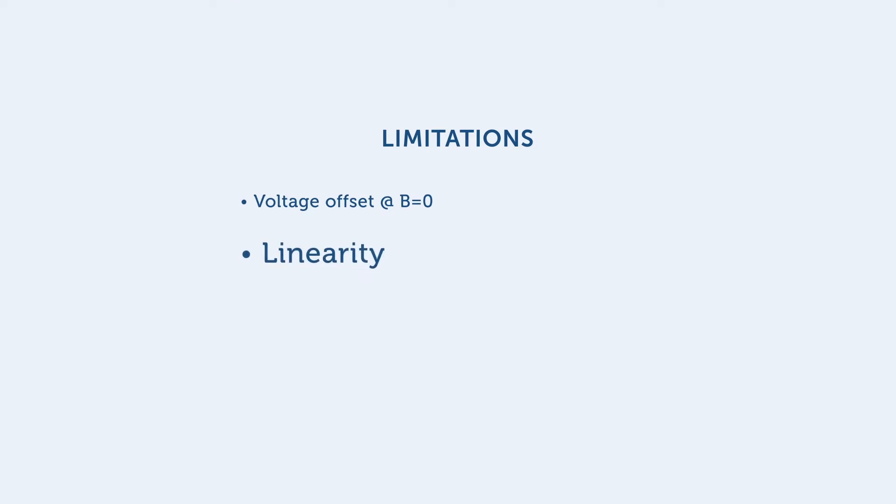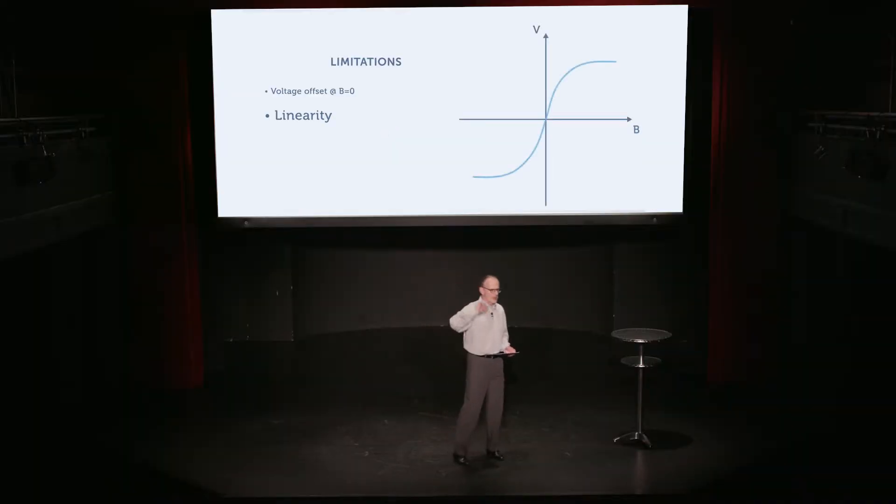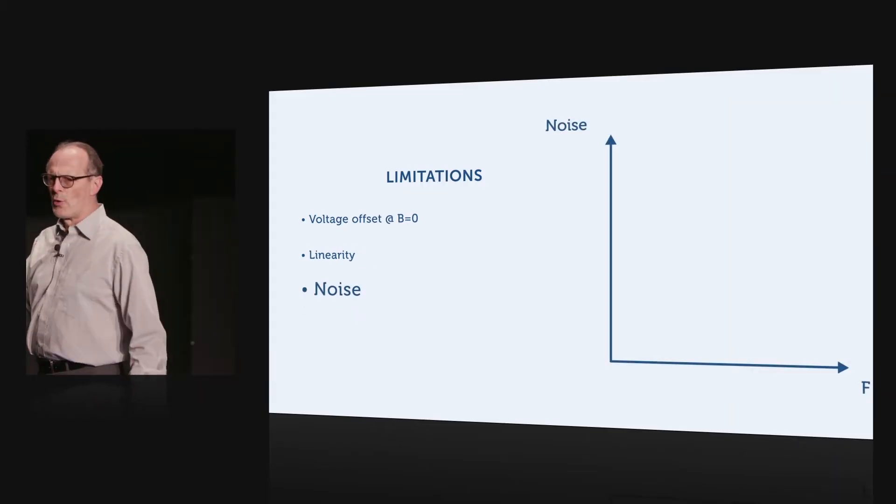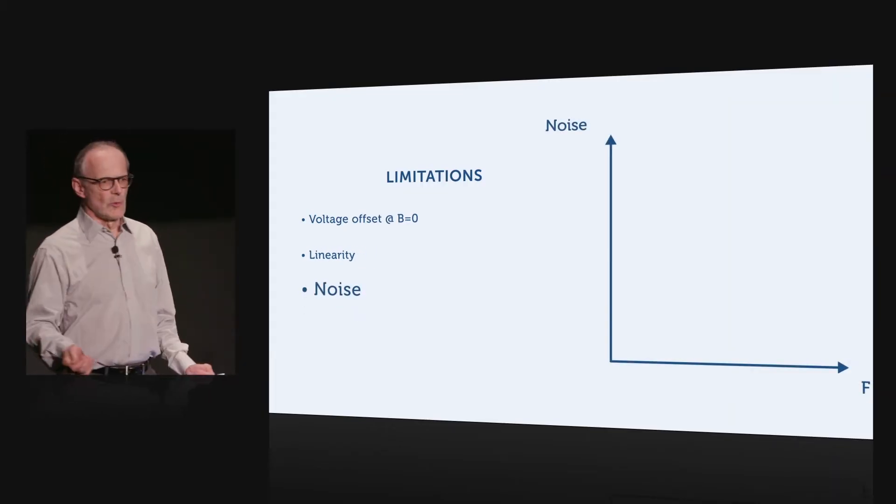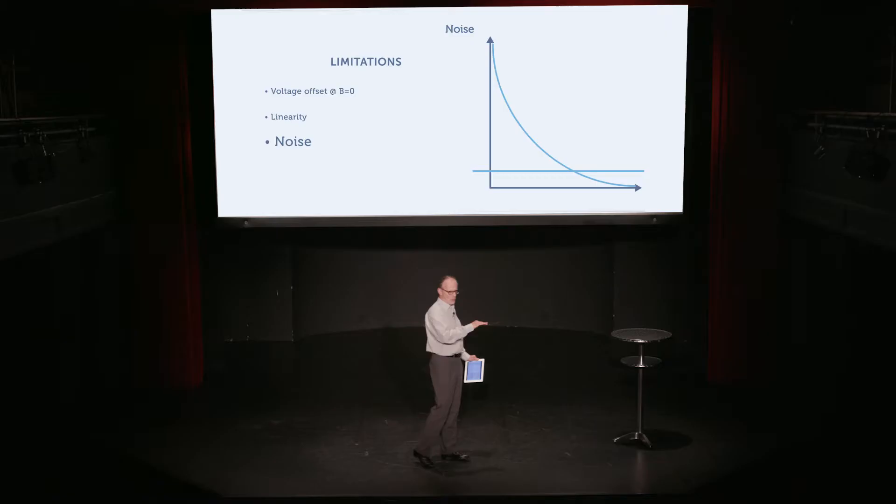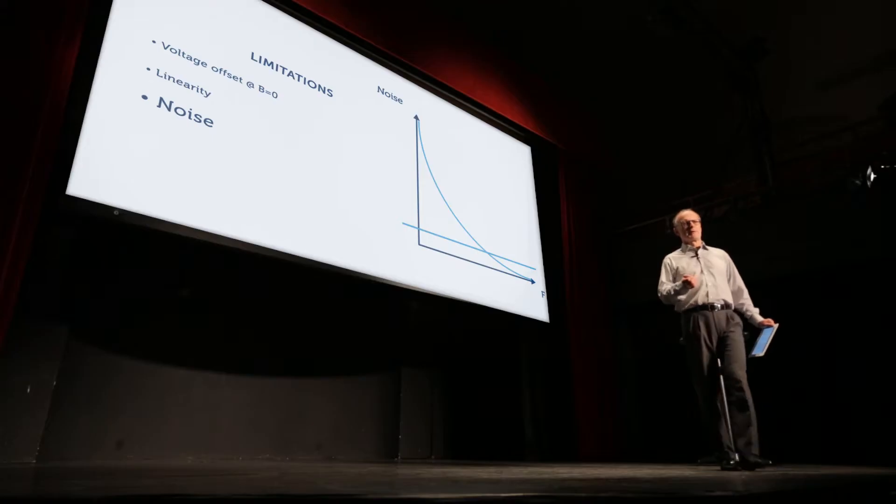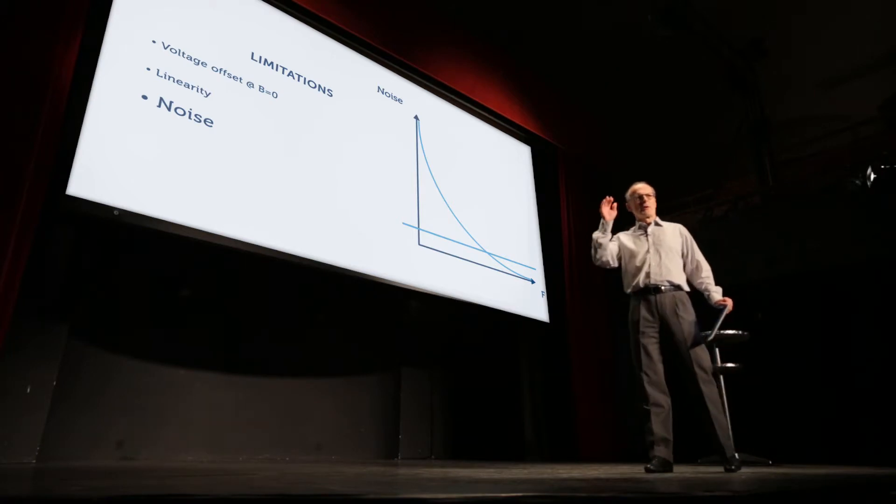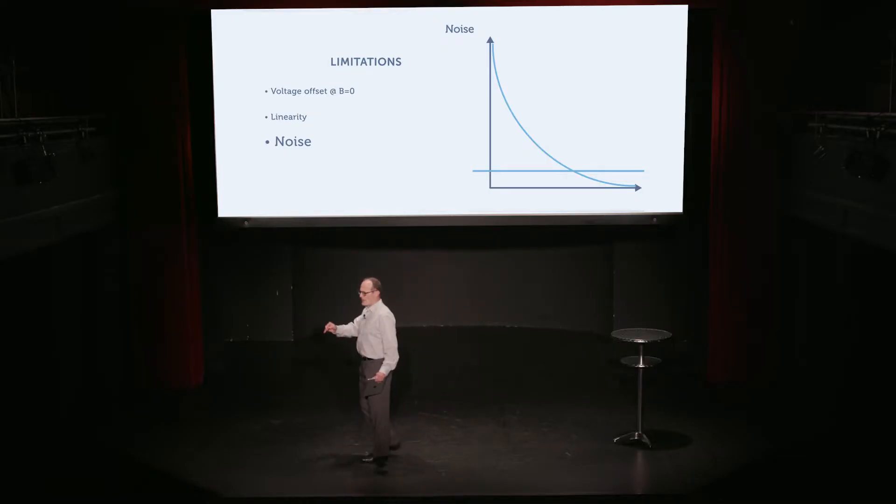Secondly, it suffers from non-linearity, especially on the extremities when the sensor starts to saturate. Hall sensors also suffer from noise. We model this noise generally with two components, a 1 over F component and a white noise, flat spectral component. The 1 over F component is the one that really bugs us because it gives very large errors, error voltages at the lower frequencies.